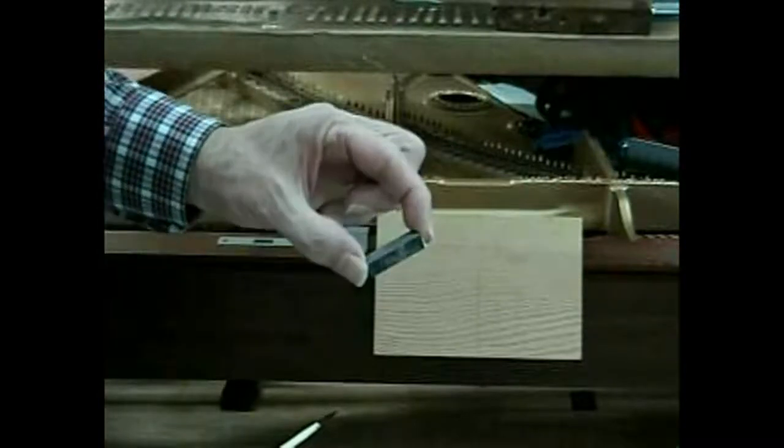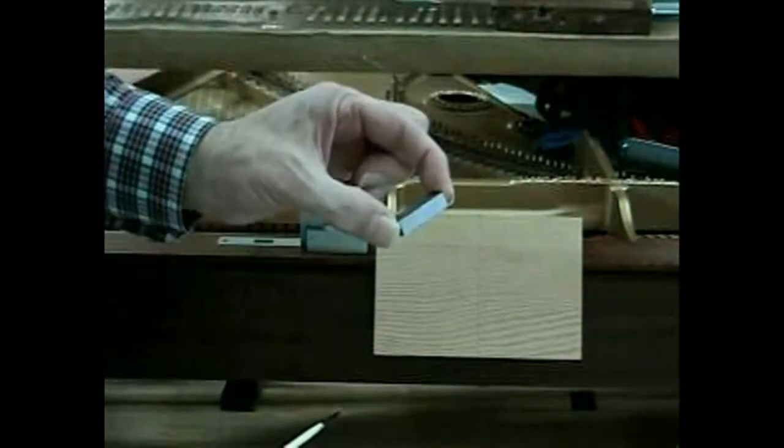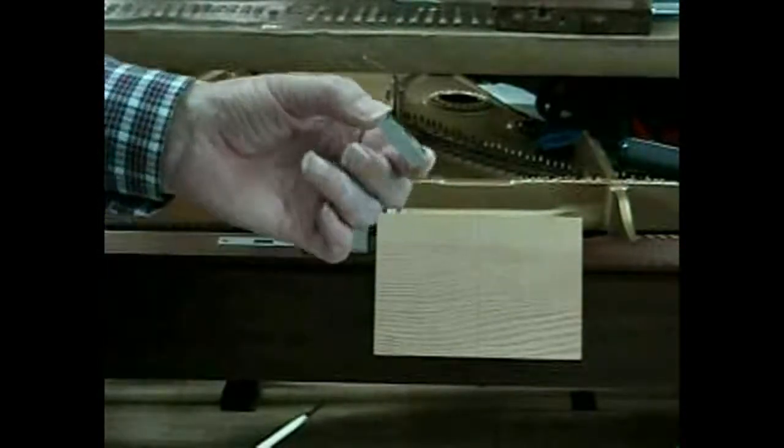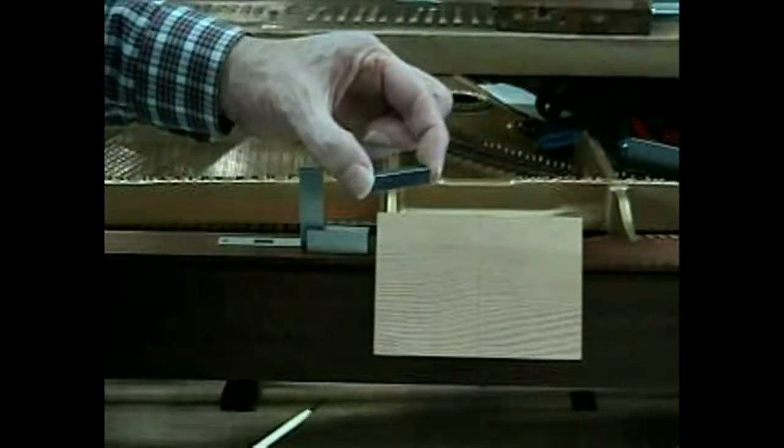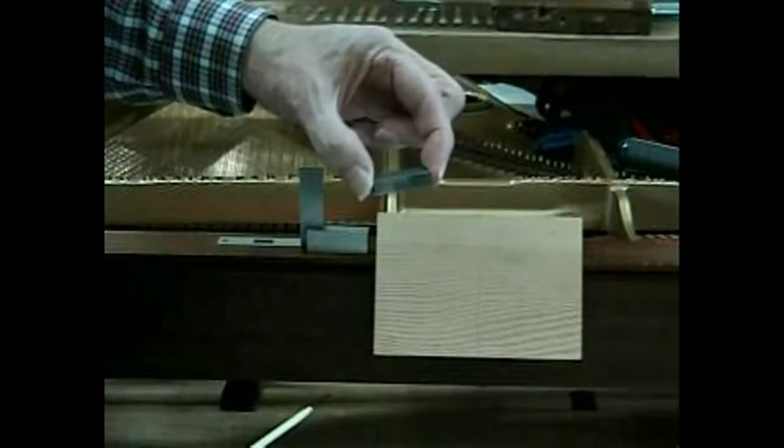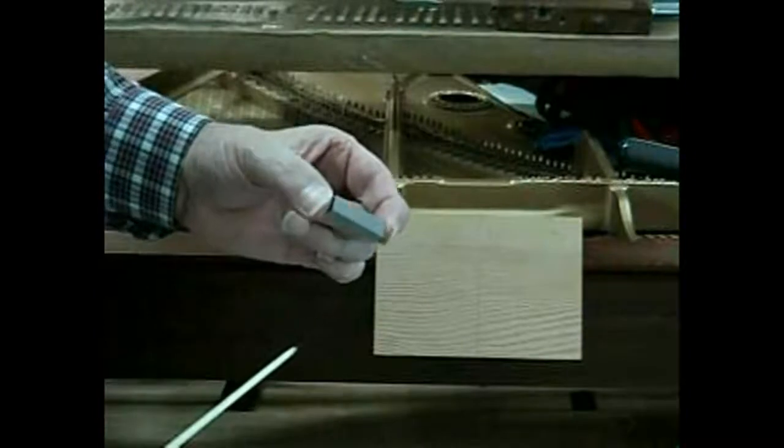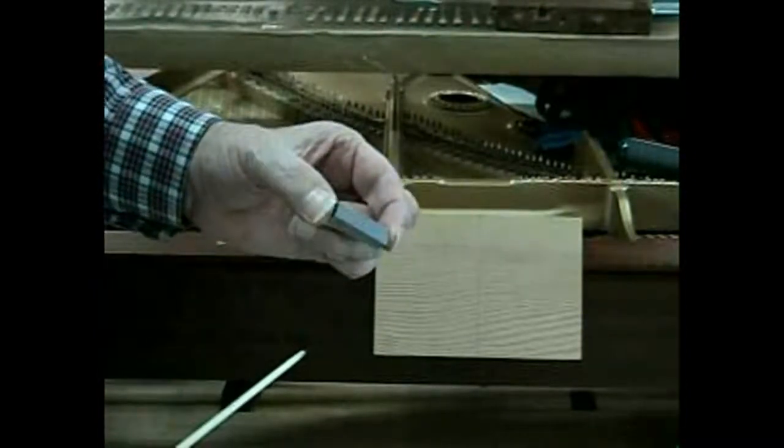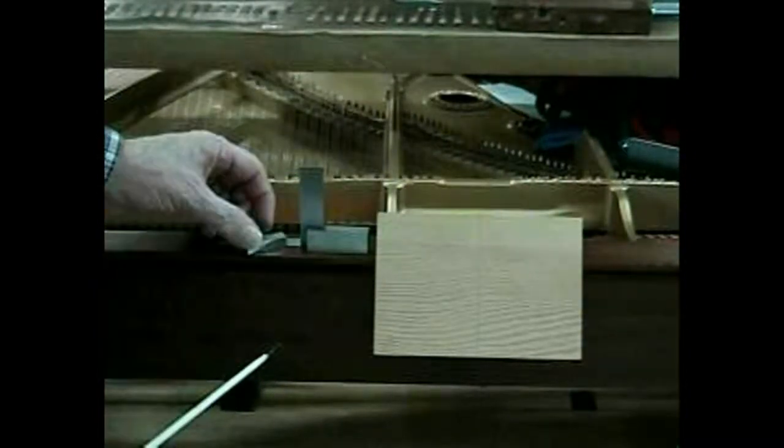Because with the damper heads on the strings without the damper felts, it doesn't give you the truest picture. This is a beautiful steel block, but it could be a little piece of maple, as long as it's square, and it's about maybe 5-16ths of an inch tall here. That dimension isn't critical.